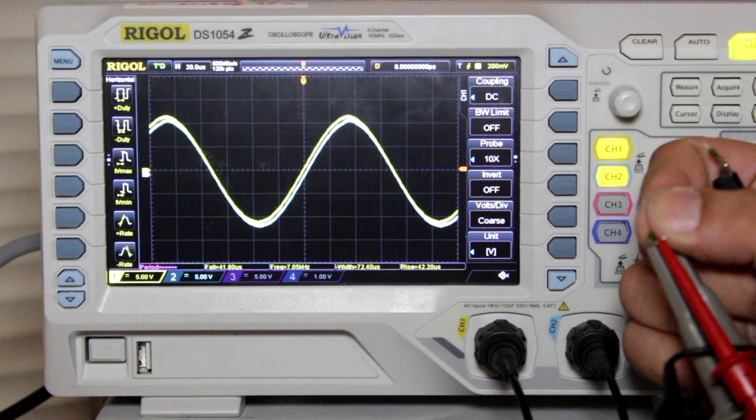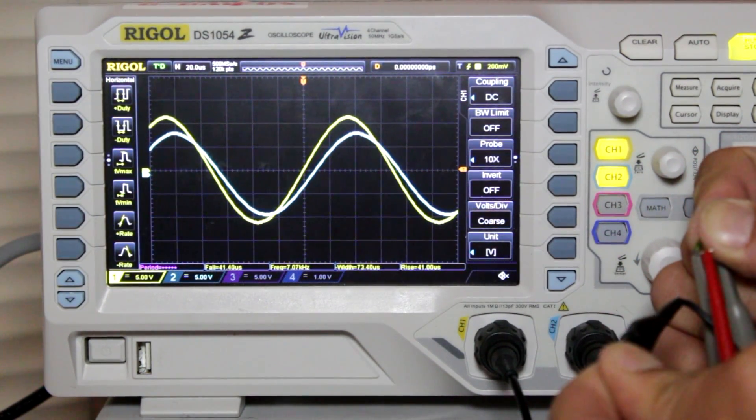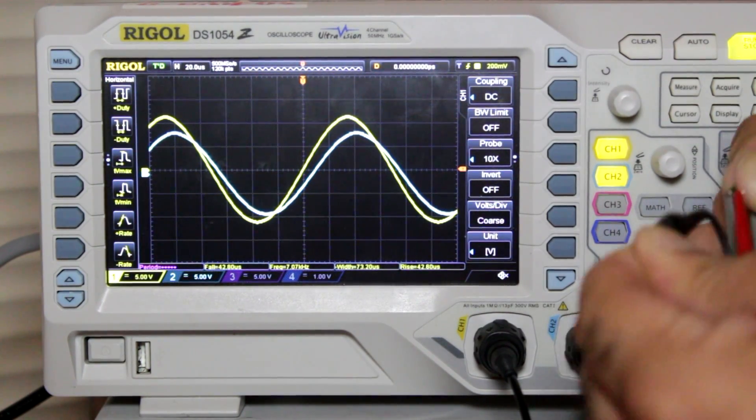But when I touch the output with my fingers, you can see that the output waveform shifts forward. And this is an indication that my body has some capacitance that's delaying the output waveform.